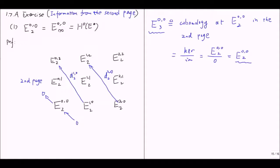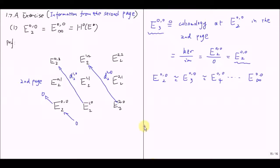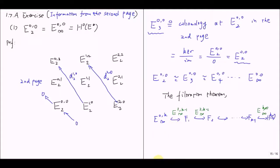The story will continue: E⁰⁰₂ is isomorphic to E⁰⁰₃, isomorphic to E⁰⁰₄, all the way until E⁰⁰∞, which means the objects at the origin stabilize after page 2. To determine the relation between the zeroth cohomology of the total complex and E⁰⁰∞, let's recall the filtration theorem. In our case it is trivial, because when k is zero, it follows immediately that E⁰⁰∞ is isomorphic to the zeroth cohomology of the total complex. So we have proved part one of this exercise.